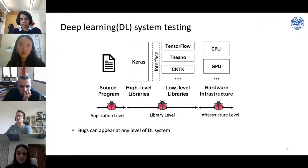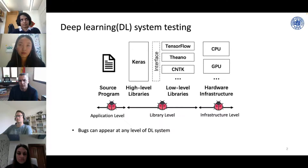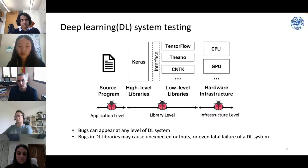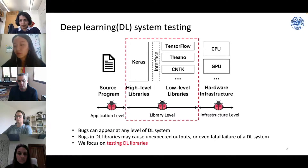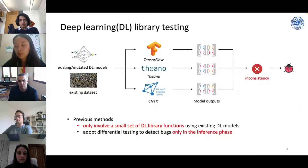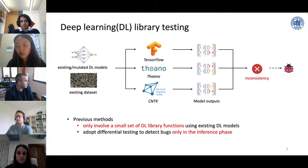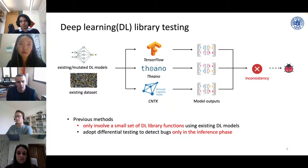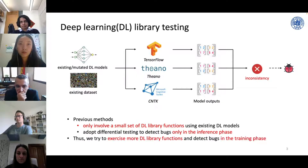A deep learning system typically consists of three main components: the source program, the library, and the infrastructure. Bugs can appear at any level, and bugs in DL libraries may cause unexpected outputs. Our work focuses on testing DL libraries. Previous DL library testing methods use either existing models or mutated ones as test inputs; however, such models cannot cover most APIs in DL libraries. In addition, these methods only detect bugs in the model inference phase by detecting inconsistent model outputs across different libraries. Our target is to exercise more DL library functions and detect bugs in the model training phase, which are not covered by existing methods.